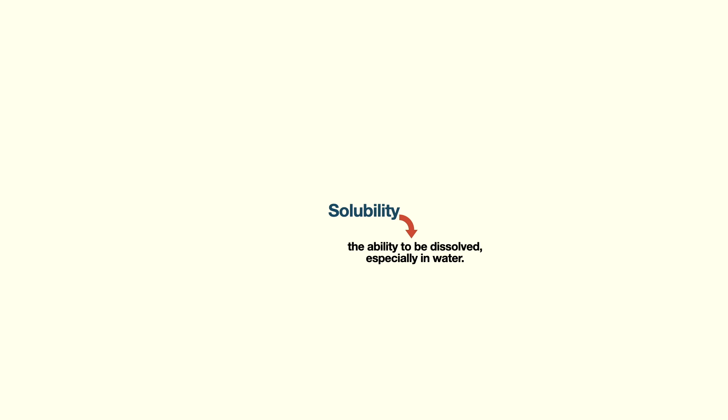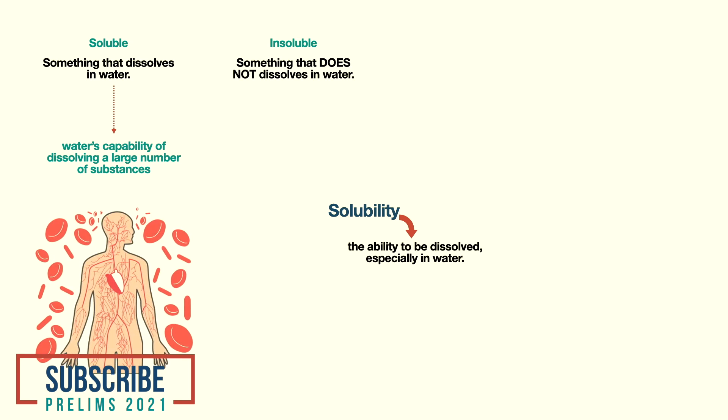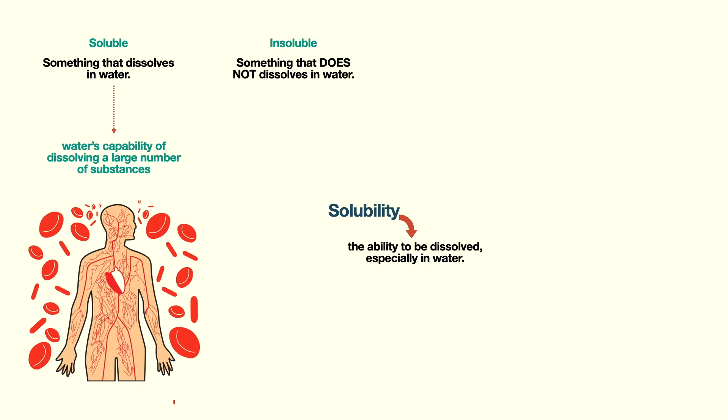Next we have solubility. Solubility refers to the ability to be dissolved in any liquid; herein we are only dealing with solubility of materials in water. Something that dissolves in water is called soluble, and if it does not, it is called insoluble. You should know that water dissolves more substances than any other liquid — that's why it is also known as the universal solvent. Due to this property, water is so essential for the survival of the human body. We cannot survive without water even for a couple of days.